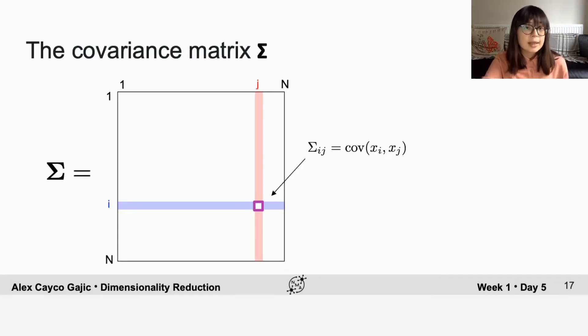All of this information can be summarized in the covariance matrix, which is usually called capital sigma.